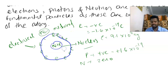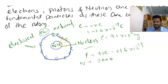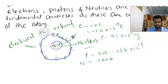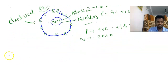In this atom, the atomic mass depends upon the mass of neutrons plus the mass of protons. This is called atomic mass. Let us take an example to understand this.